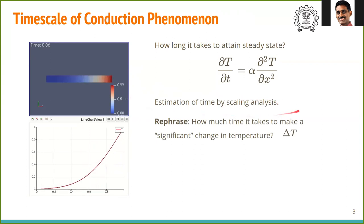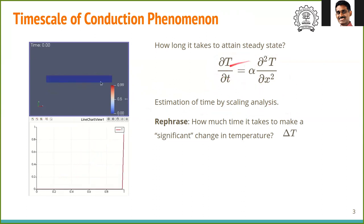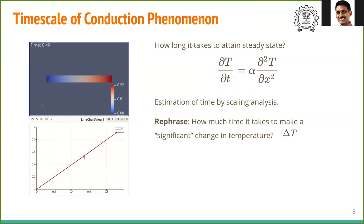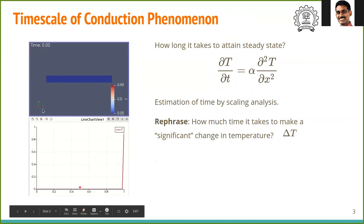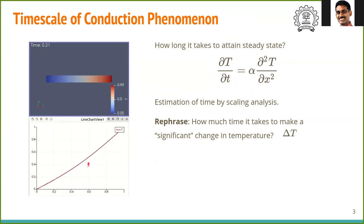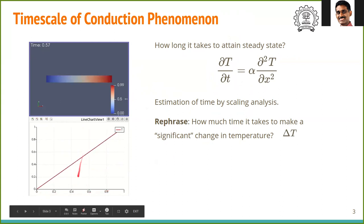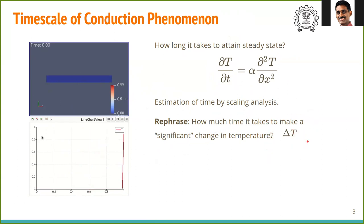This method is called scaling analysis, where you estimate length scales, time scales, and temperature scales to get an estimate of the time scale. Instead of asking exactly how long it takes, we rephrase it as: how much time does it take to make a significant change — for example, going from zero to about half of the total change, say some δT.